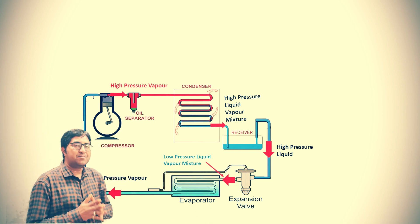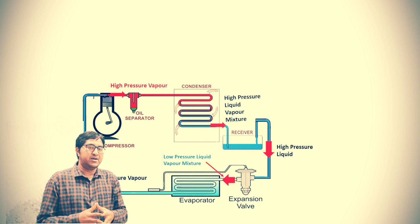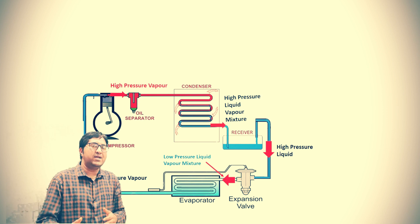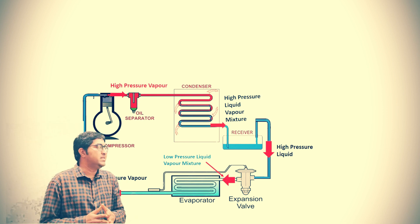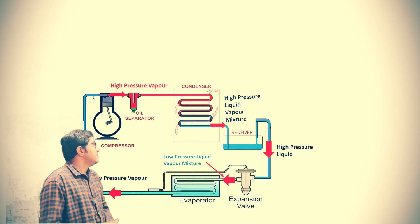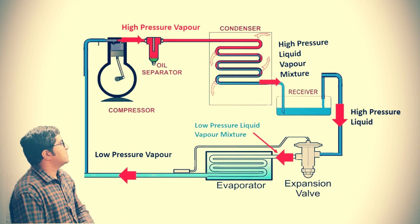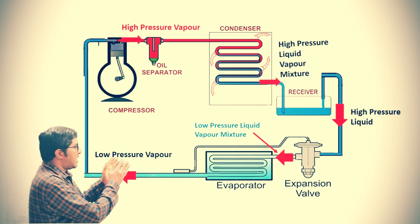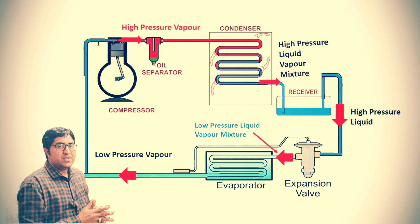The function of the compressor is to increase the pressure of the refrigerant, because we require pressure for the circulation of the vapor refrigerant in the cycle. This compressor increases the pressure, so the outlet of the compressor is high pressure vapor. This high pressure vapor then enters into the condenser.